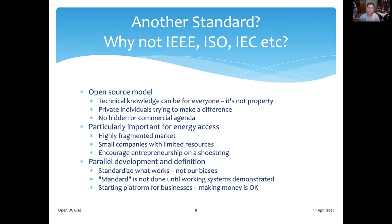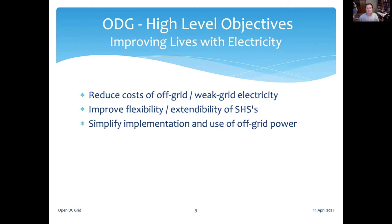We'd like to encourage entrepreneurship on a shoestring. Our approach involves the parallel definition of the standard with demonstration hardware and software so we can standardize what works rather than our personal biases. Our standard is not complete until we can demonstrate working hardware and software. Our prototype hardware and software can be freely used in commercial products, and we consider it just fine to make money off our work. At ODG, our key objective is improving lives with electricity — specifically, reducing the cost of off-grid or weak-grid electricity. We want to improve the flexibility and expandability of solar home systems, which are often a closed garden of proprietary technology, and simplify the implementation and use of off-grid electricity.